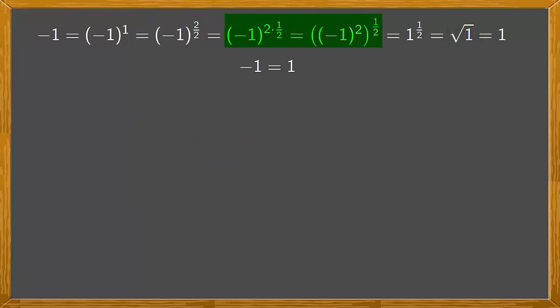If we look at the rest of the proof it all seems correct until we apply the property that taking the power of a power the exponents are multiplied. Is that where the problem is?